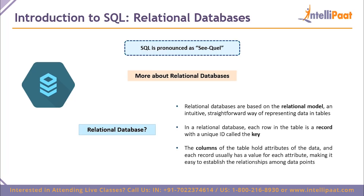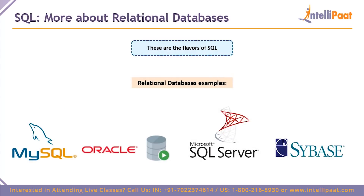Relational databases are based on the relational model, where you can draw out a model and put out relations between your data in a very straightforward way. All the data is stored in the form of tables, and keys give a unique identifier to each entry in a particular table. Rows hold the data and columns hold the attributes, and each record always has a value associated with a particular attribute, making it easy to establish relationships among the data.